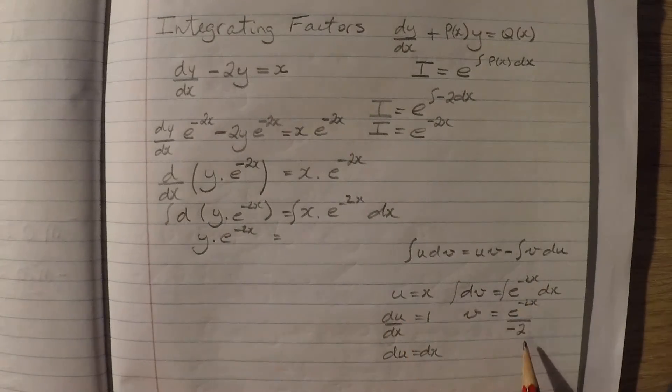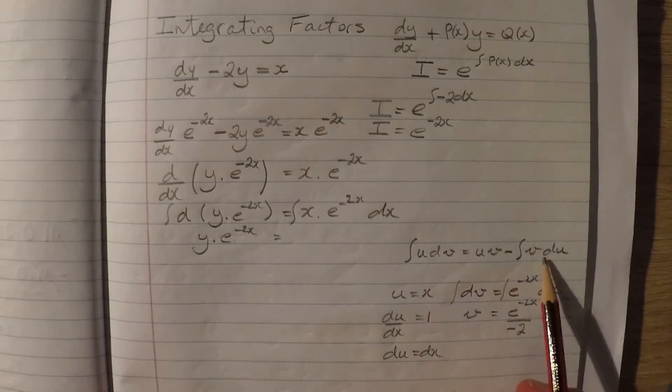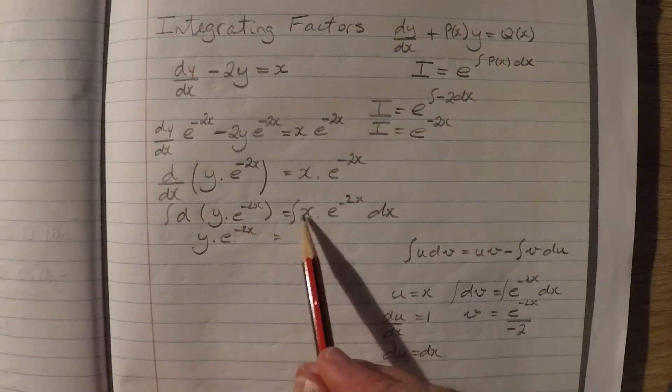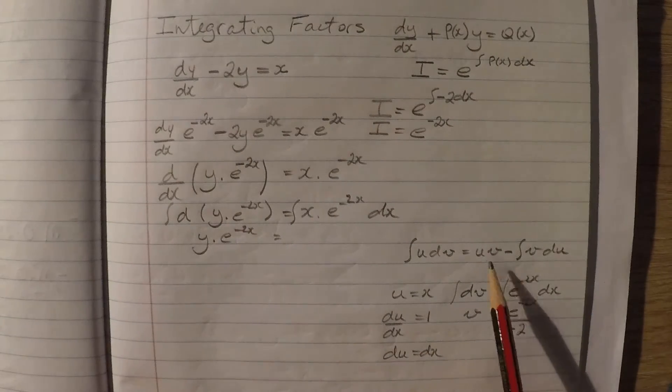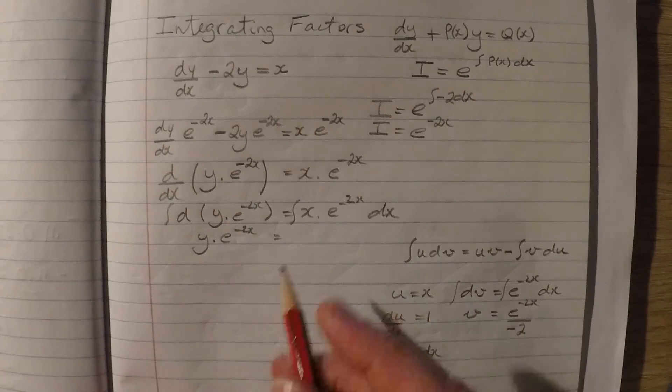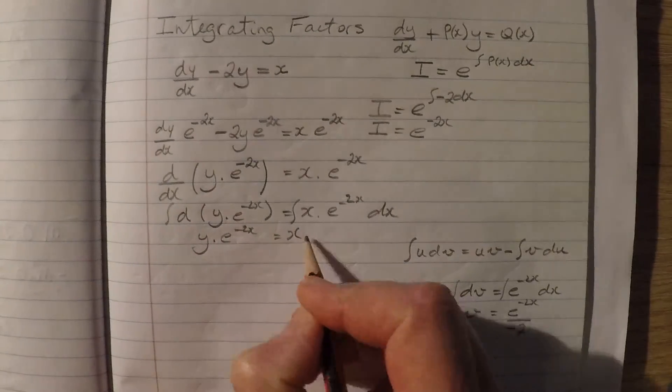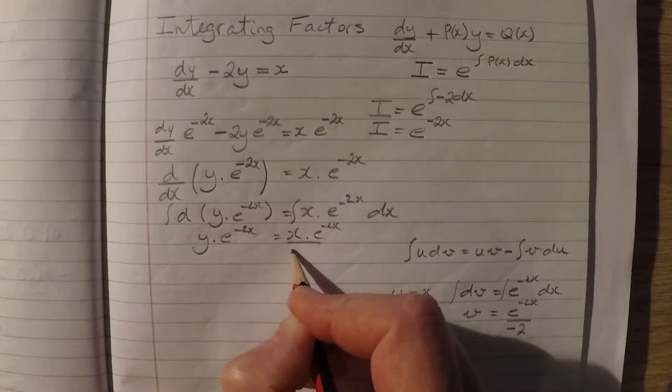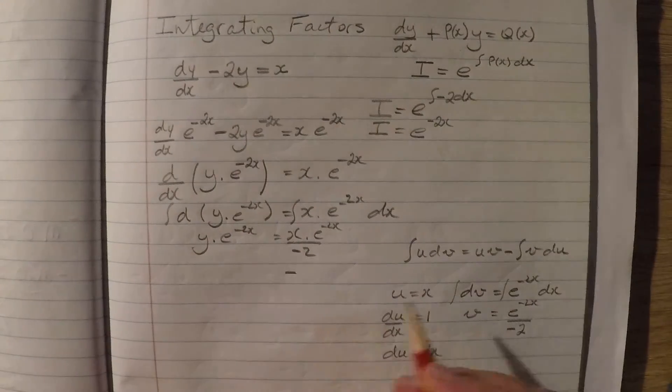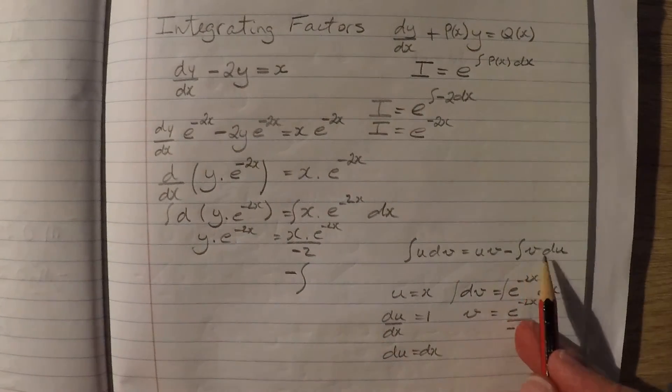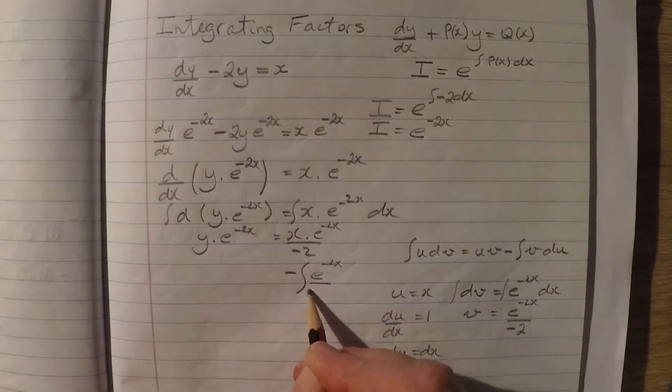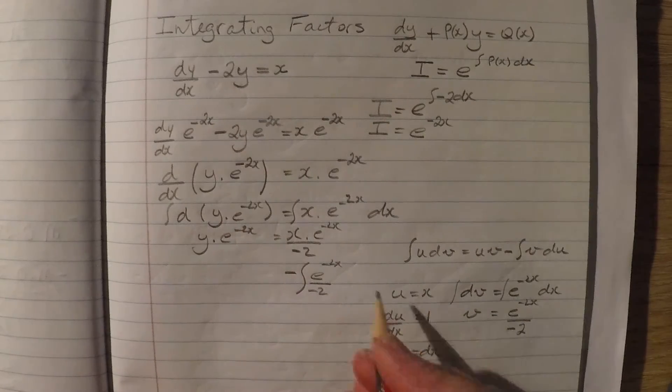Now that I've got all of these pieces worked out, I can apply this rule. This part here represents the integral of u times dv. So all of this bit will be replaced with u times v. u times v is x times this. x times e to the negative 2x over negative 2. Minus the integral of v du. e to the negative 2x over negative 2. And remember du is the same as dx.